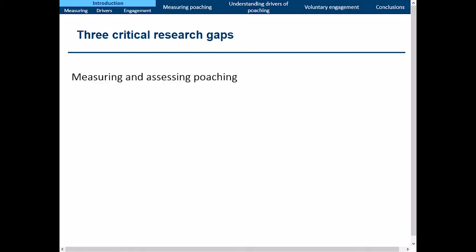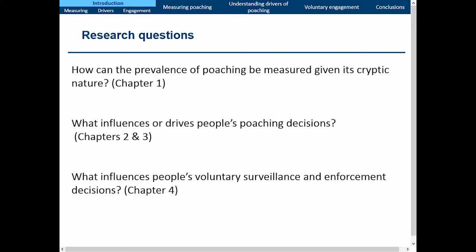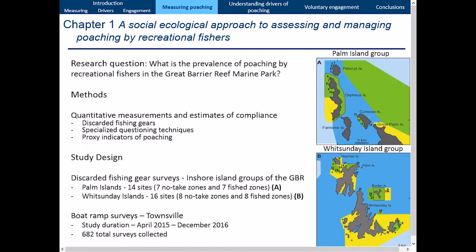I've described three critical research gaps and three research questions to address them. Focusing on the first — how can we actually measure the prevalence of poaching — we went out to the Great Barrier Reef Marine Park and developed a social-ecological approach to assess poaching. We used quantitative measurements and estimates of compliance levels through underwater visual census of discarded fishing gears and specialized questioning techniques in social surveys, and developed proxy indicators of poaching. We looked at 30 sites in the Palm and Whitsunday Island groups, paired in no-take and fish zones, 15 and 15. Boat ramp surveys were conducted in Townsville over 21 months, collecting 682 total surveys.